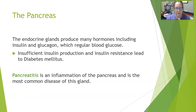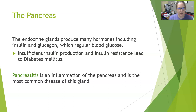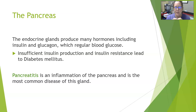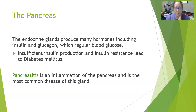The endocrine portion of the pancreas produces many hormones, including insulin and glucagon. Insulin and glucagon regulate blood glucose. They are endocrine because these hormones are released straight into the bloodstream, not into an open space like the GI system.